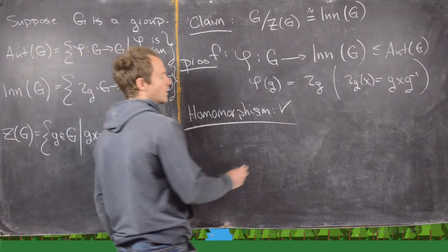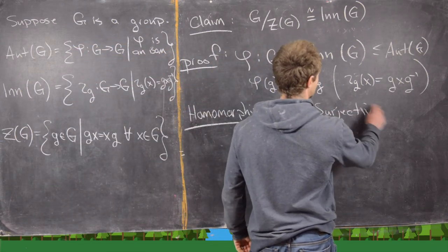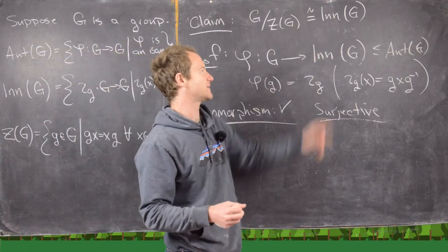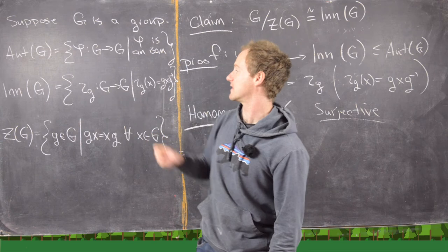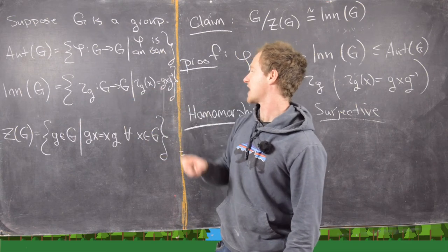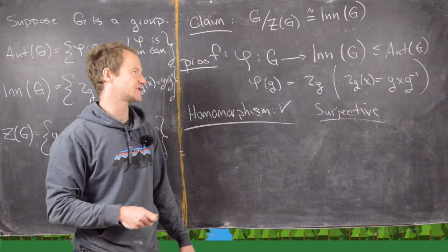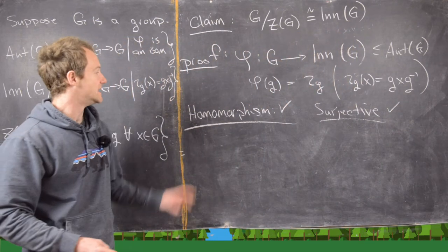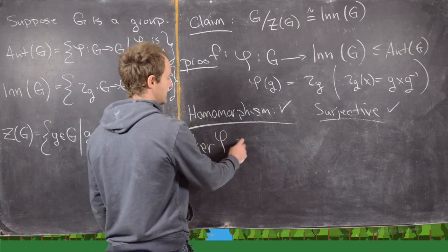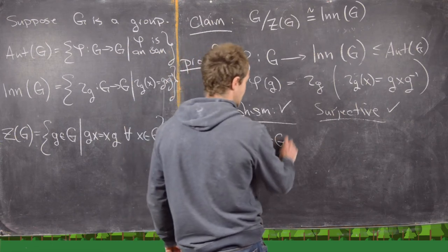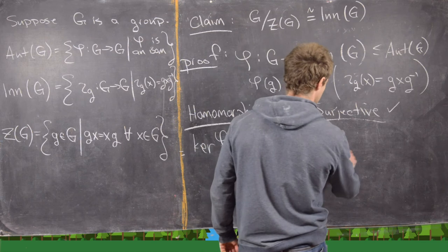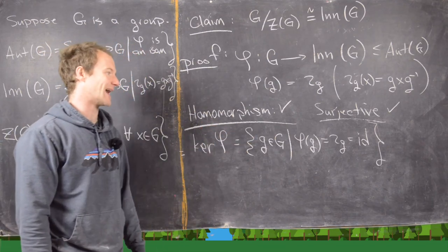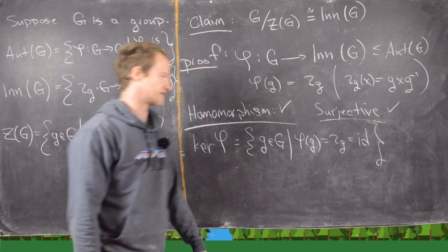We also need to check that φ is surjective. Every element in the inner automorphism group is given by a function acting by conjugation, and we can find a preimage just by taking the corresponding group element, so φ is obviously surjective. Now let's find the kernel. The kernel of φ is all g in G such that φ(g) = ιg equals the identity map, meaning ιg(x) = x for all x in G.